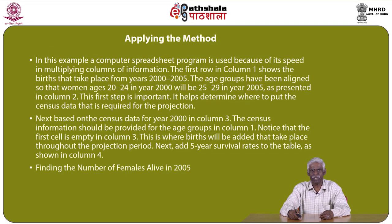In this example, a computer spreadsheet program is used because it speeds up multiplying column information. The first row in column 1 shows births that have taken place from 2000 to 2005. Age groups have been aligned so that women ages 20 to 24 in 2000 will become 25 to 29 in 2005. This first step is important as it helps determine where to place the census data. Notice that the first cell is empty in column 3 because births will be added that took place during the projection period.